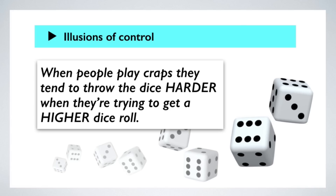Here's another interesting phenomenon. When gamblers throw dice in a game like craps, it turns out that when they want a higher dice roll, they throw the dice harder than when they want a lower dice roll. Our brains and our bodies associate the outcomes of a dice roll with a variable that we have control over.